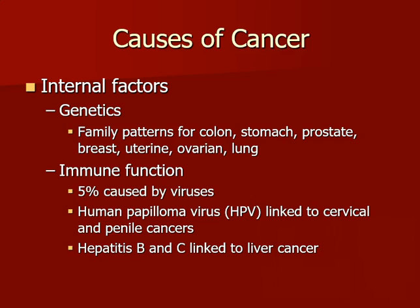Causes of cancer include internal factors such as genetics or heredity. Family patterns exist for colon, stomach, prostate, breast, uterine, ovarian, and lung cancers. If people in your family — parents, aunts and uncles, or grandparents — have experienced these types of cancers, you could be at increased risk. So you need to pay special attention and either prevent them or detect them early. Also, only about 5% of cancers are actually caused by viruses, including the human papillomavirus, which can be linked to cervical or penile cancers, and hepatitis B and C, which can be linked to liver cancer.